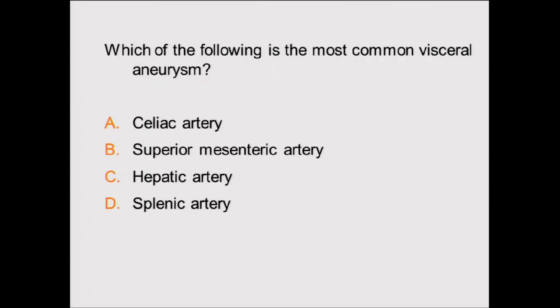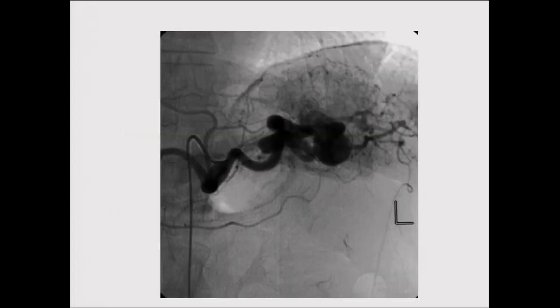Which of the following is the most common visceral aneurysm? A: celiac artery. B: SMA. C: hepatic. D: splenic. The answer is D — the splenic artery is the most common visceral artery aneurysm, usually located in the distal segment at the splenic hilum.